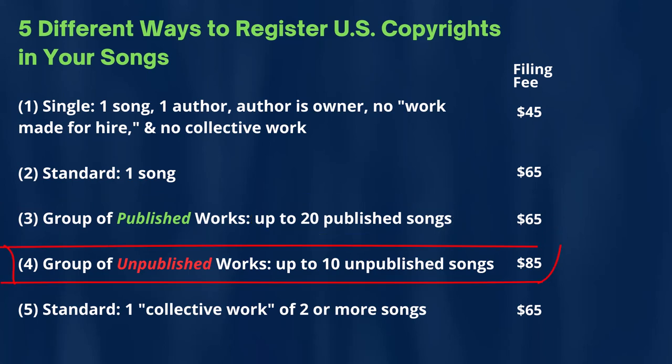Number four is what the copyright office calls a group of unpublished works. For this particular approach, you could file up to 10 unpublished songs. The current U.S. Copyright Office governmental filing fee for approach number four — filing a group of unpublished works, up to 10 unpublished songs — is $85.